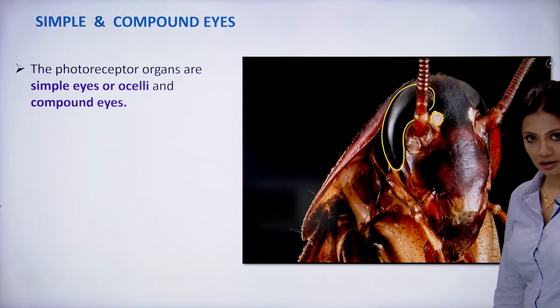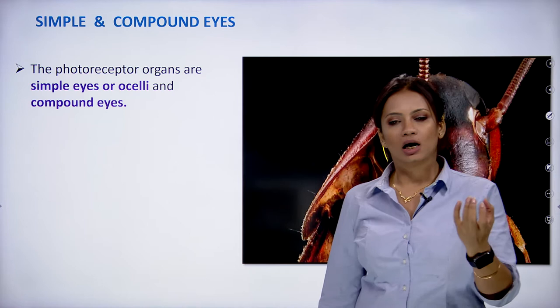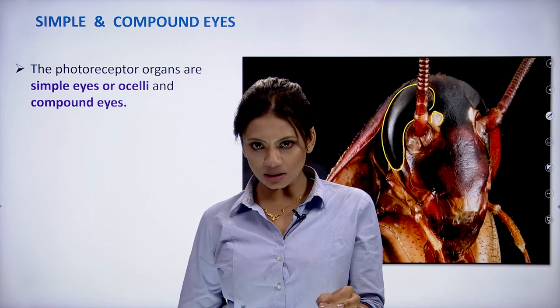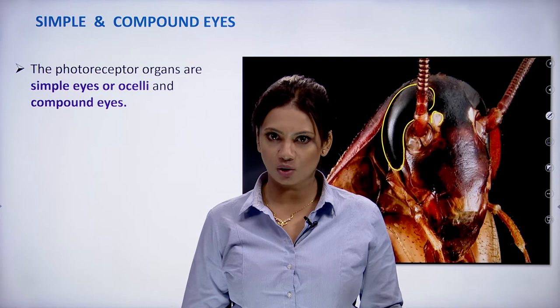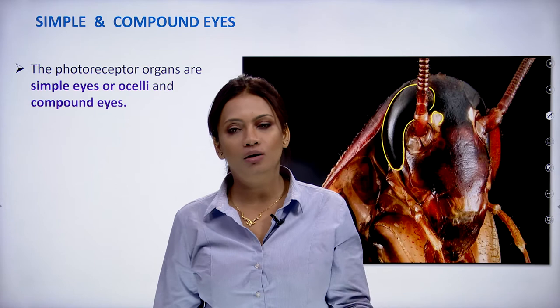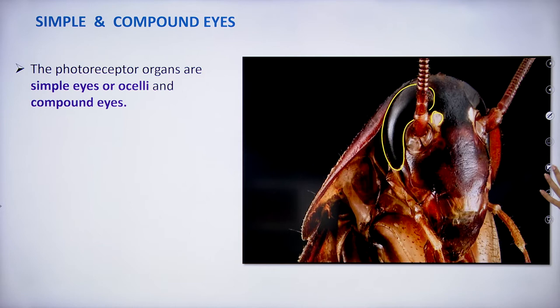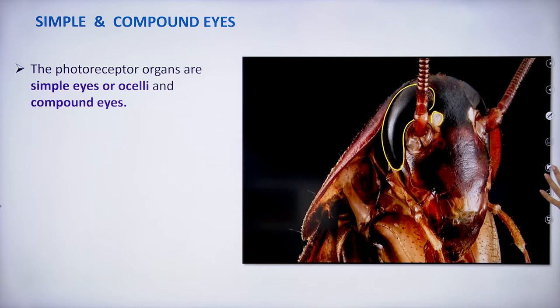The simple eyes are photoreceptors — cells which are able to receive light and create impulses to send to the brain. A receptor takes a stimulus, converts it into an impulse, and sends it toward the brain. The photoreceptor organs include both the simple eye or ocelli and the compound eyes.